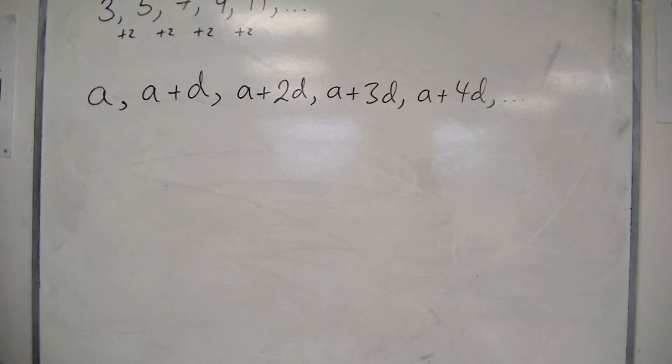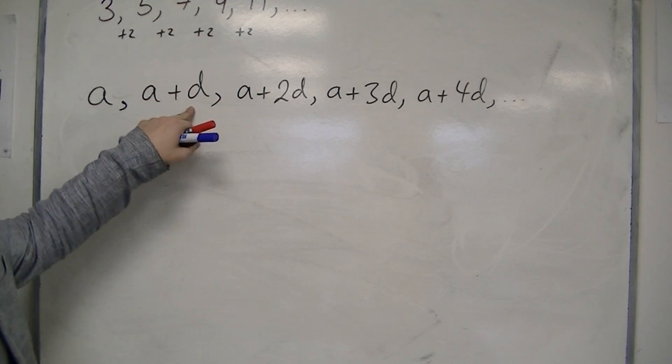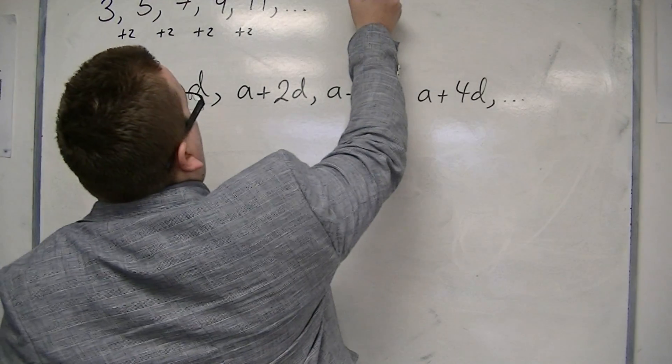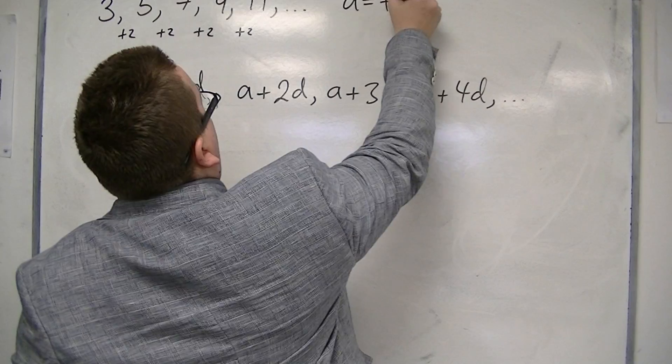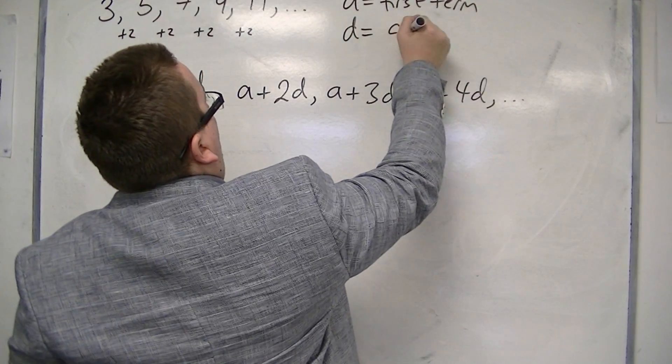And that would be my sequence, with a starting term and a common difference. So we're going to be using A to represent the first term, and D to mean the common difference.